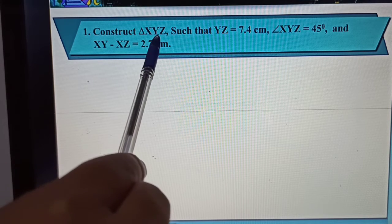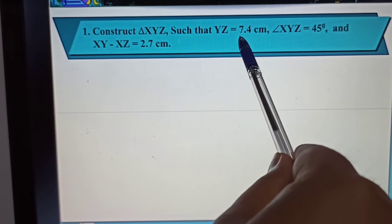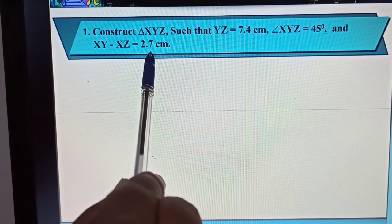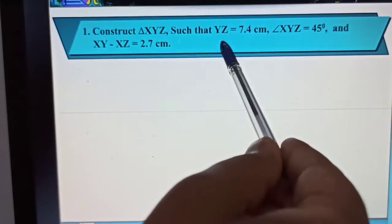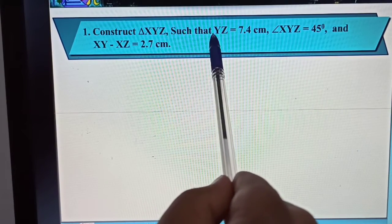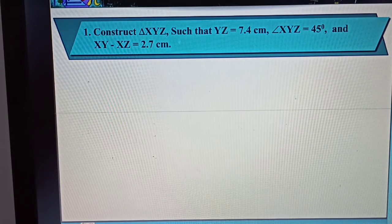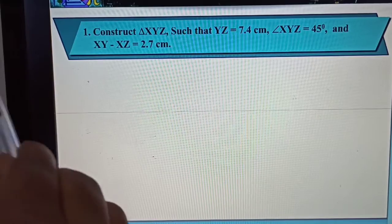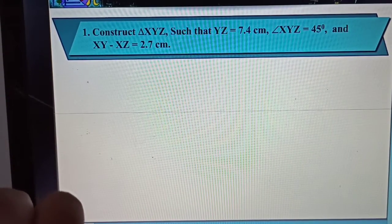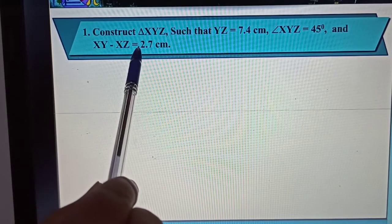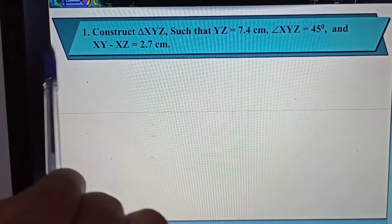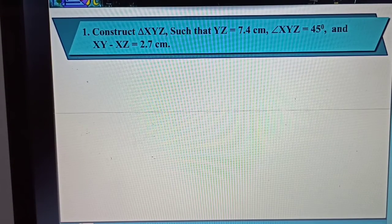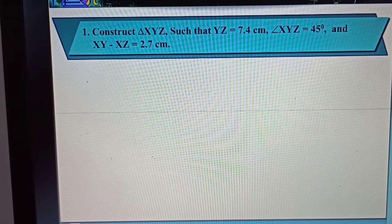Let's move to the very first sum. Construct triangle XYZ. Here the base is given to you, that is YZ which is 7.4 cm. Then the angle is given to you, 45 degrees, and this subtraction is given to you: XY minus XZ equals 2.7 cm. The base will be formed from points Y and Z, so your third point is X.